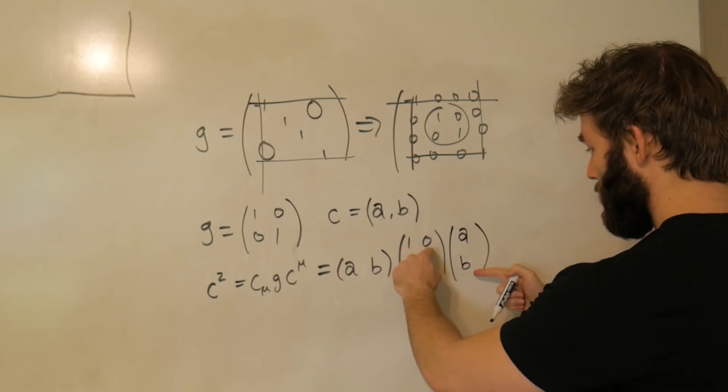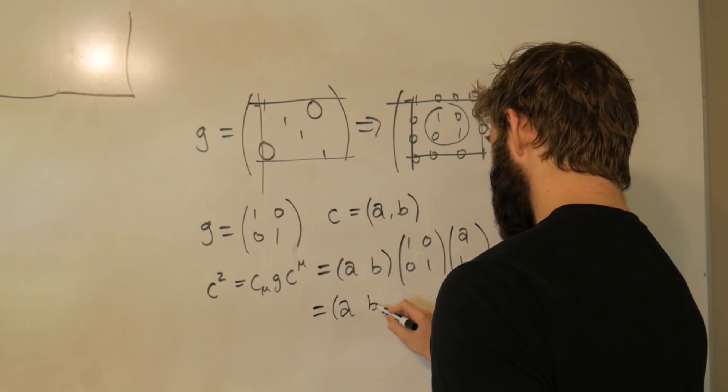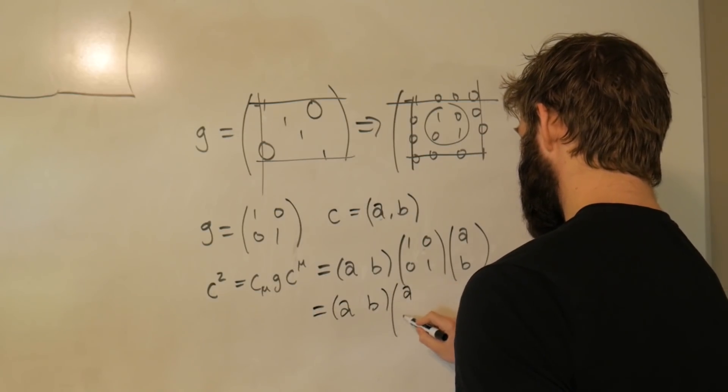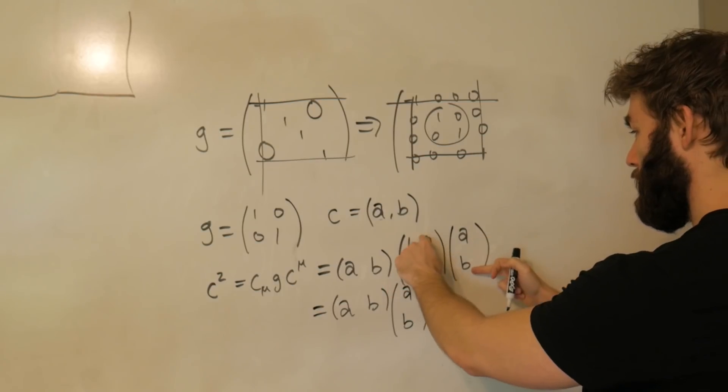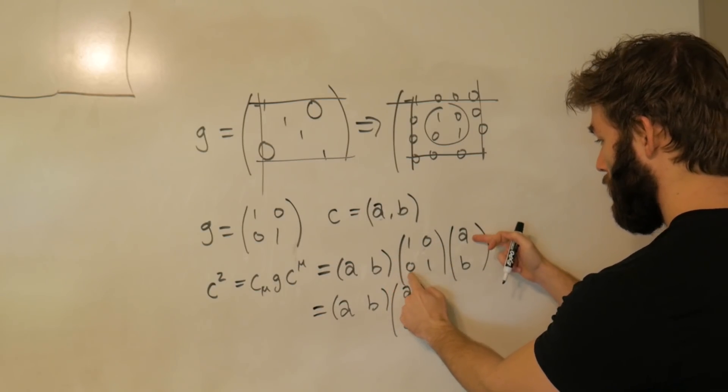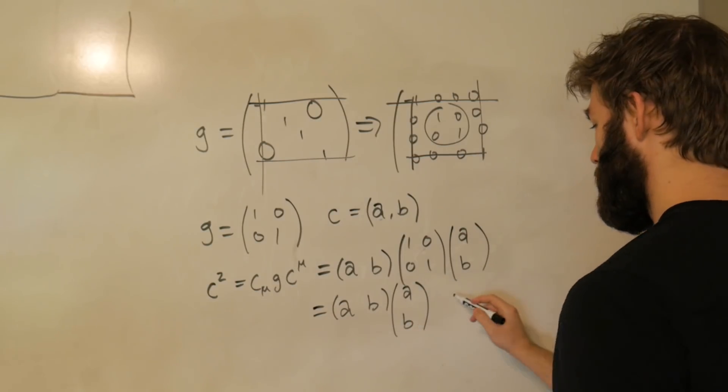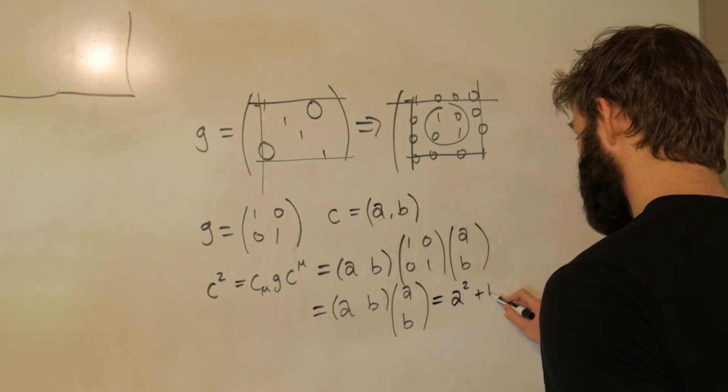So c squared is going to be c_μ g c^μ, which is going to equal a, b, times the identity matrix. And this is a little redundant really because the identity matrix is essentially the matrix equivalent of multiplying by one. And then we have our column vector here, a, b. When we multiply this together, what we get is that this is equal to a, b, column vector, a, b. We get this is equal to a squared plus b squared.